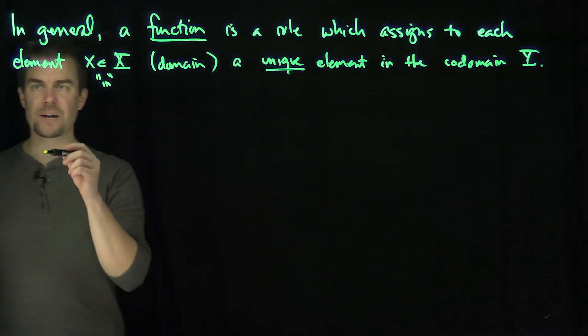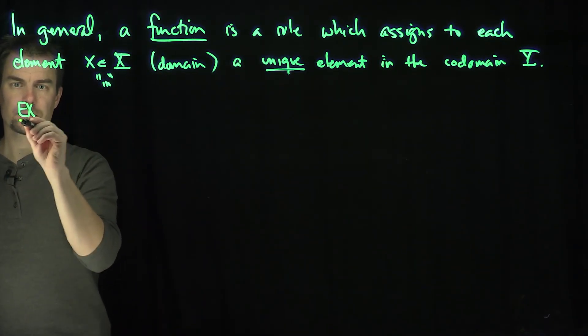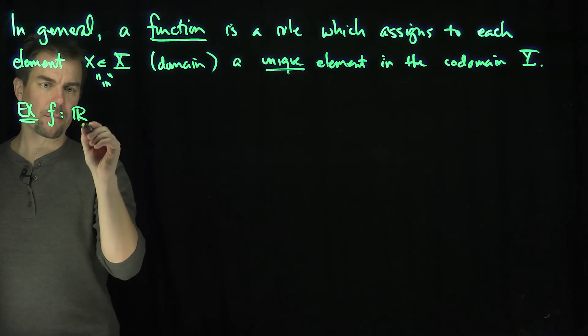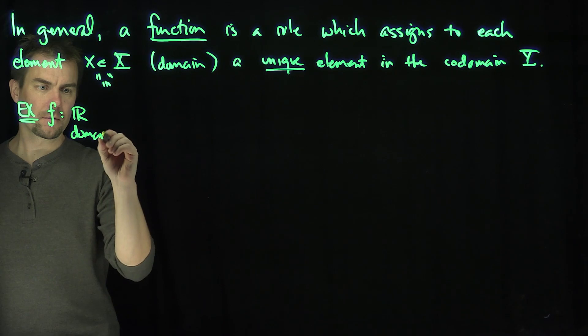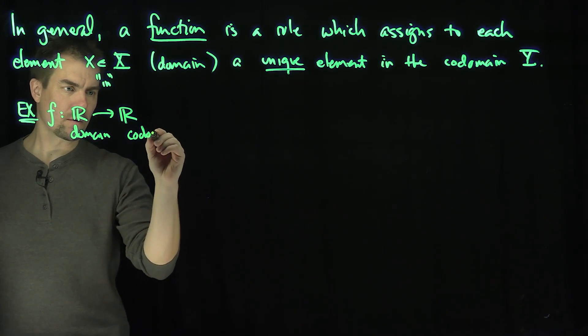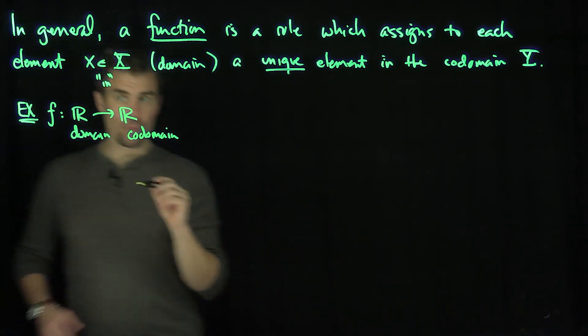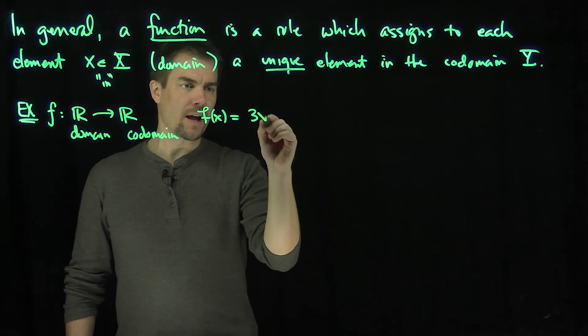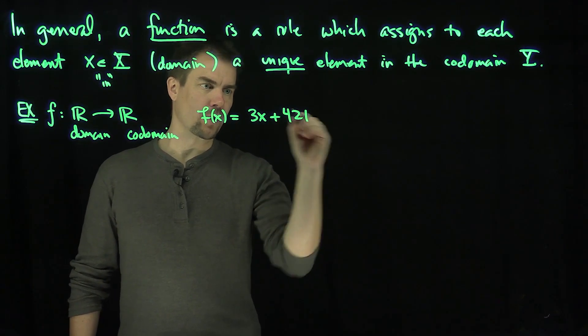So let me show you a couple of examples of this. Here's an example of a function. f is a function which inputs a real number, that's my domain, and outputs a real number, that's my codomain. And what's the rule? The rule is f(x) = 3x + 421.